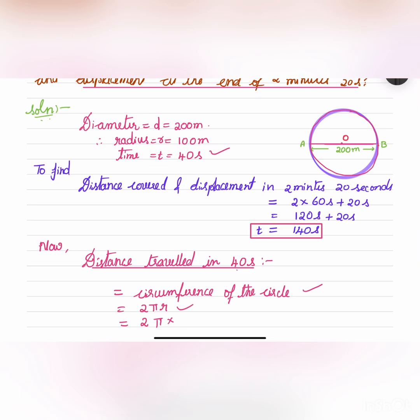Formula for the circumference of the circle is 2πr and r is equal to 100, which is half of the diameter.